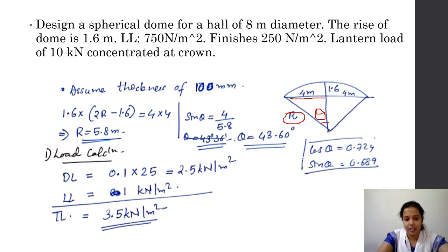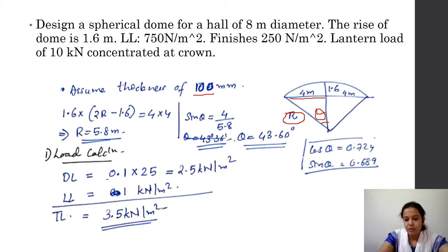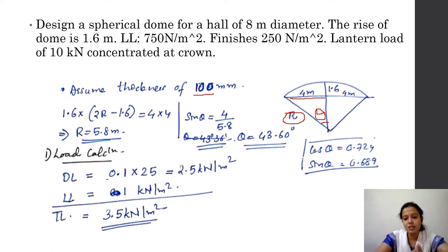Now let us calculate the loads. We assumed a thickness of 100 mm, so the dead load is 0.1 × 25 = 2.5 kN/m². Live load plus finishes is 750 + 250 = 1 kN/m². Wait — the dead load is 0.1 × 25 = 2.5 kN/m². Total load combining dead load, live load, and finishes comes to 3.5 kilo newton per meter square.